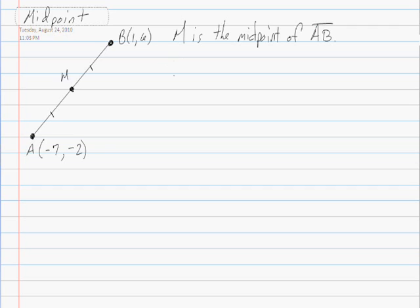Our formula for midpoint is that the midpoint is a set of coordinates equal to the sum of the x's divided by 2, and the sum of the y's divided by 2. So it's an average of the x components and the y components.